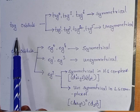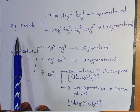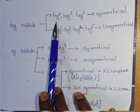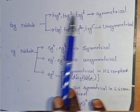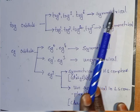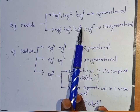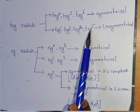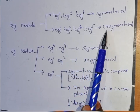To understand the Jahn-Teller theorem, first we have to know about symmetrical and unsymmetrical orbital configurations. For the T2G set of orbitals, T2G0, T2G3, and T2G6 are said to be symmetrical configurations because the electron filling will be symmetrical in nature. But in case of T2G1, T2G2, T2G4, and T2G5, the electron arrangement is unsymmetrical, so these configurations are called unsymmetrical configurations.